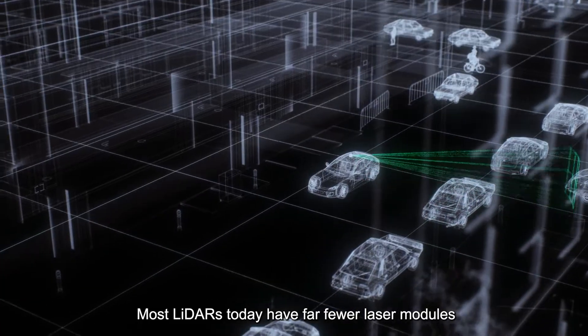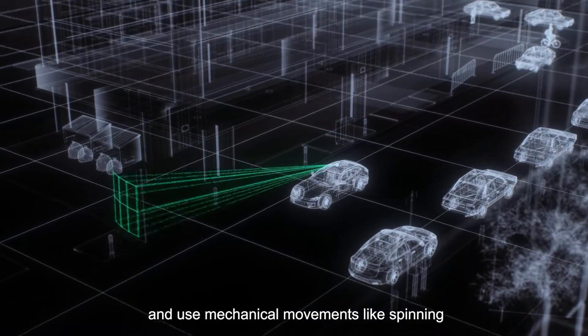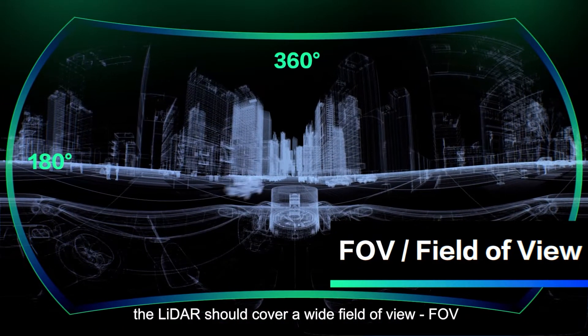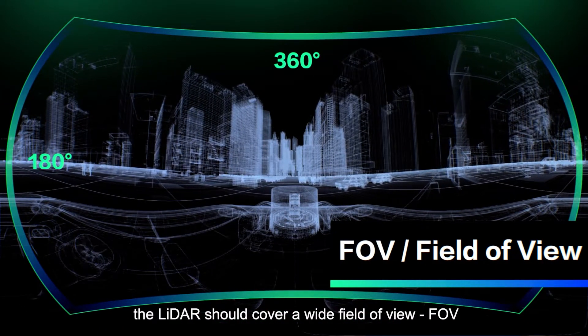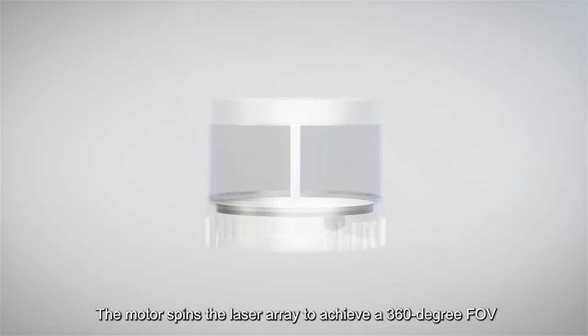For autonomous driving applications, the LiDAR should cover a wide field of view, FOV. The most effective method is with the mechanical spinning LiDAR. The laser transmitters are aligned vertically to form a column of lasers. The motor spins the laser array to achieve a 360-degree FOV.